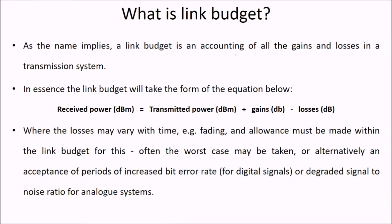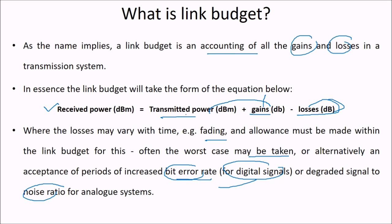What is link budget? Link budget is an accounting of all the gains and losses in a transmission system. The link budget can be written in this form: received power equals transmitted power plus the gains minus the losses. Transmitted power added with the gains of the antenna - both the receiver and the sender antenna - along with all the losses incurred. These losses may vary with time, it may be fading, and allowance must be made within the link budget for this. Often the worst case should be taken, or alternatively an acceptance of period of increased bit error rate for digital signals or degraded signal to noise ratio for analog signals.